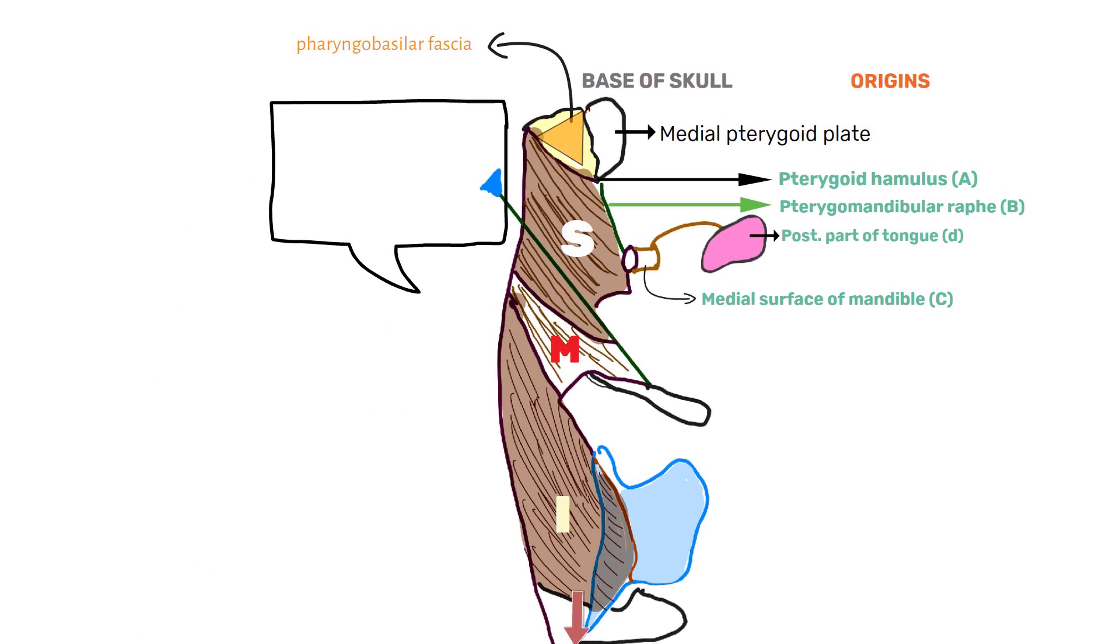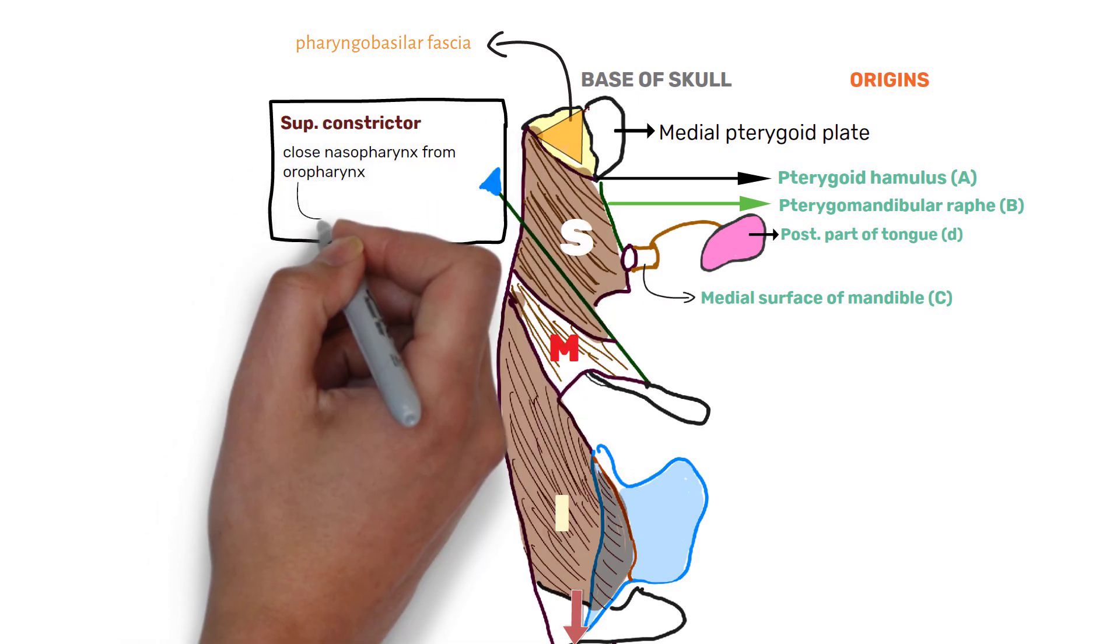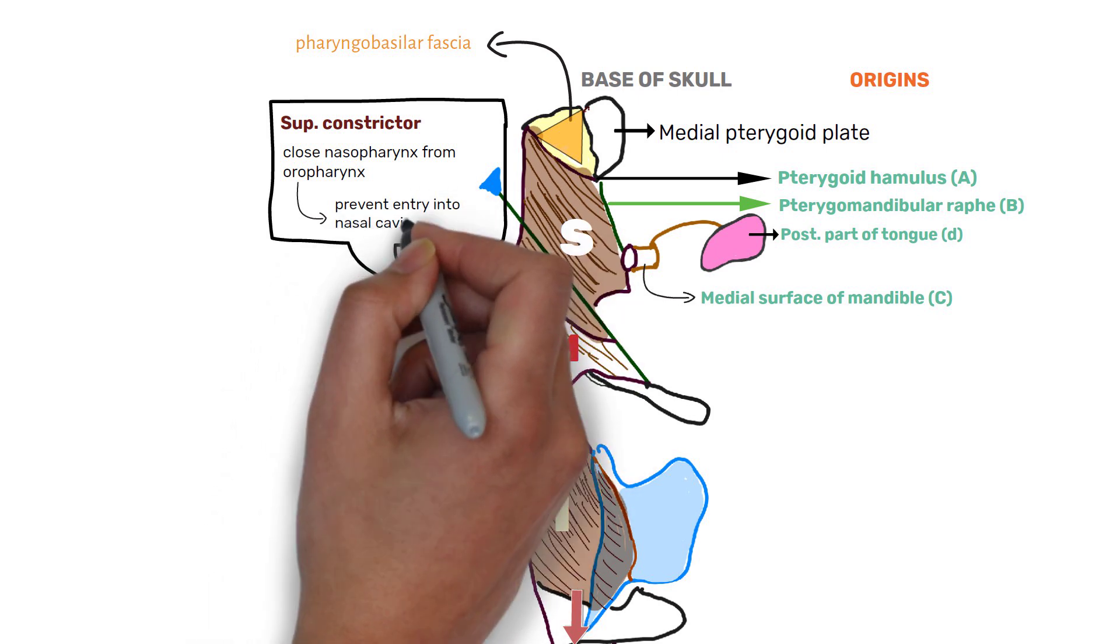The muscle contracts during swallowing to close off nasopharynx from the oropharynx, thus preventing the entry of food in the nasal cavity.